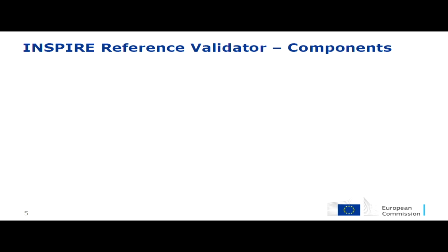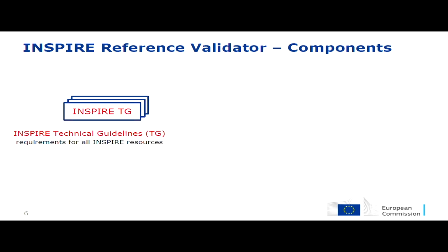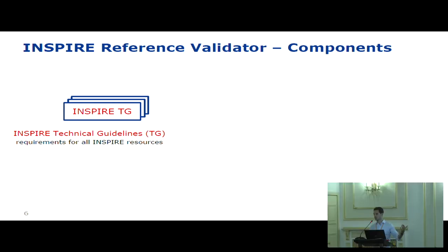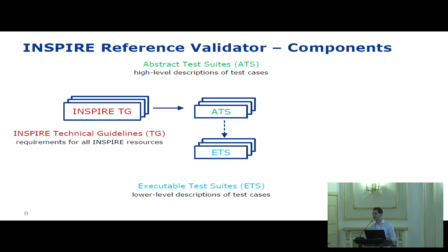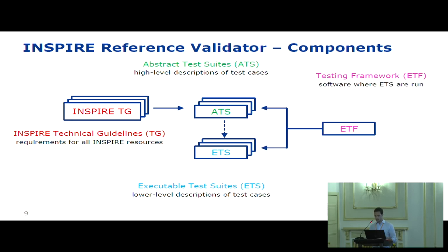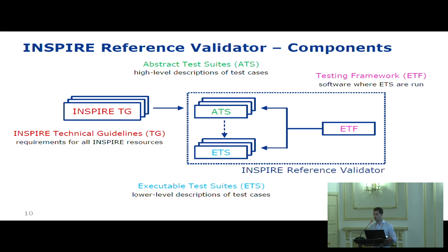The validator is not a single software but is based on a number of components. Starting from the INSPIRE technical guidelines, abstract test suites (ATS) are derived — high-level or abstract descriptions of the tests. ATS are then translated into ETS, or executable test suites, which are concrete low-level descriptions that can be executed by a program — essentially the code. Finally there is the ETF, a testing framework that allows ETS to be run. All these components together form what we call the INSPIRE reference validator.